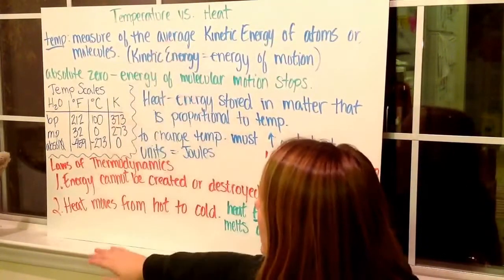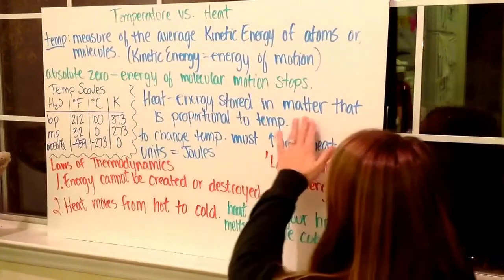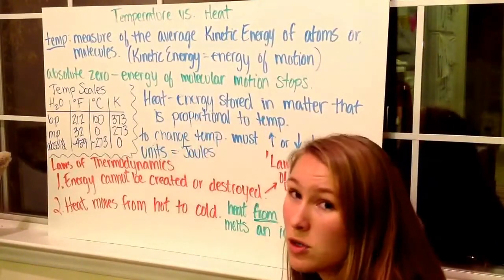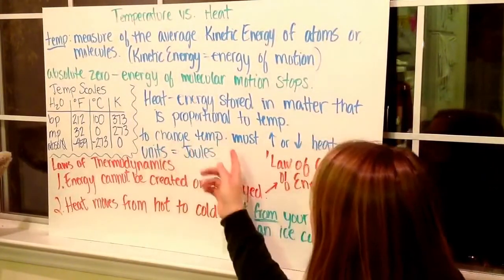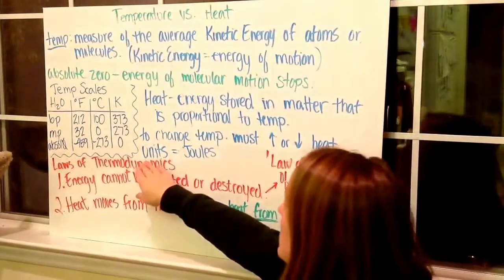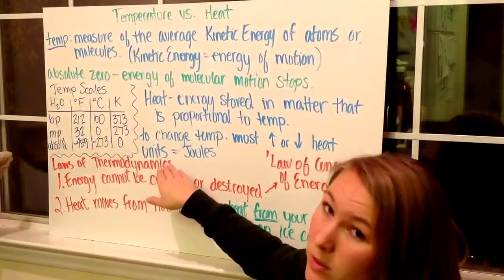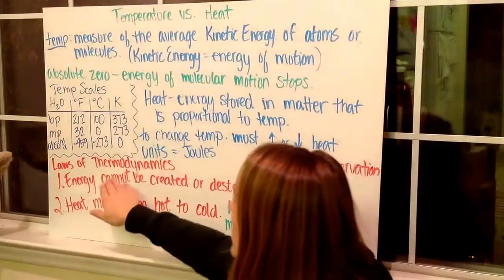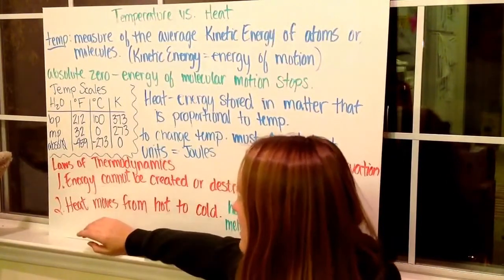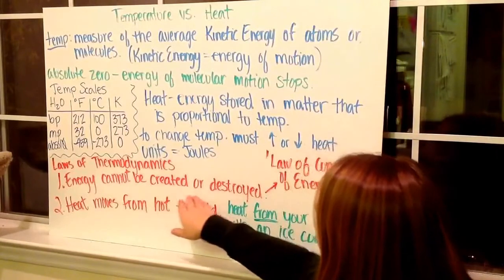So opposite of temperature, we have heat, which is the actual energy that's stored within matter, that is proportional to temperature. So it's proportional, but not equal to. To change the temperature, we must increase or decrease the heat. And heat's units are measured in joules, same as energy. Heat is equal to energy. We have to state our laws of thermodynamics. The first law of thermodynamics states that energy cannot be created or destroyed. We call this the law of conservation of energy.